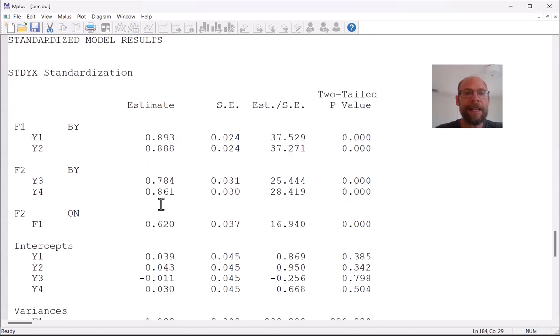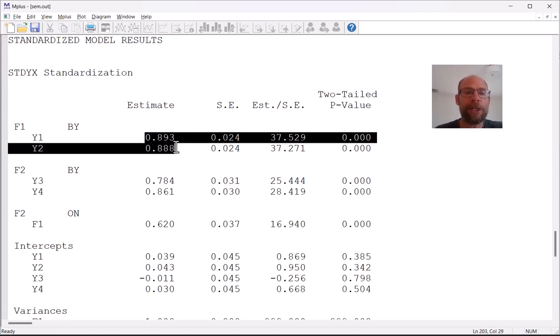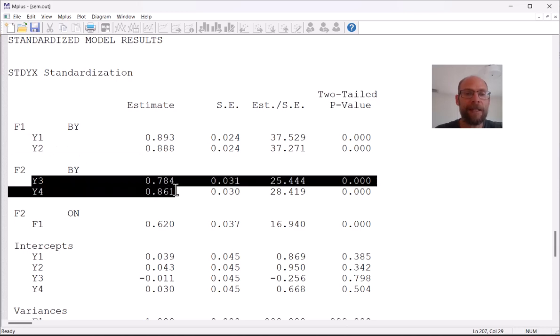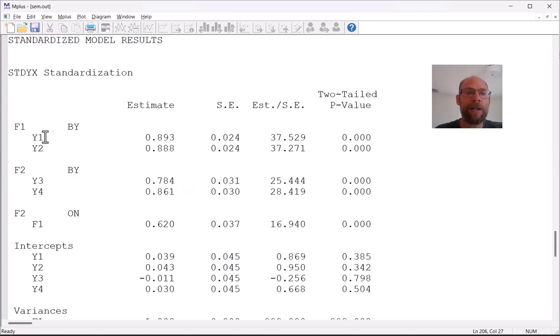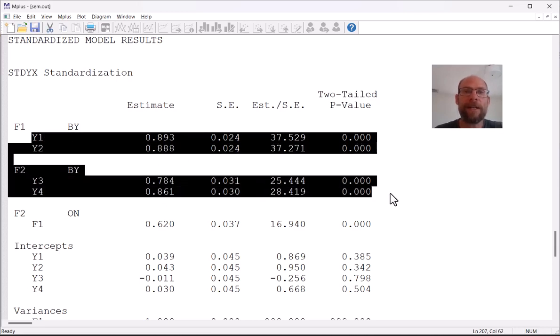Below are the standardized model results which many people find more interpretable because now the variables are standardized to a variance of 1 and that turns these factor loadings into correlations or makes them interpretable in terms of correlation coefficients. And you can see that these are very strong standardized factor loadings particularly for the factor f1. For f2 they are maybe slightly lower, at least the first one. And so overall these are strong standardized factor loadings indicating a high reliability of the indicators as measures of each factor.